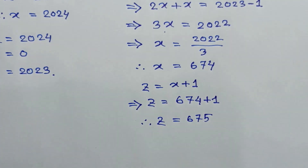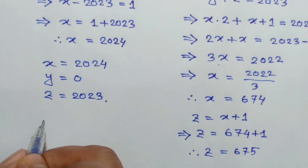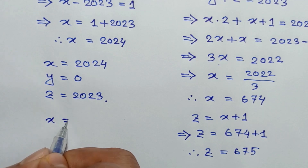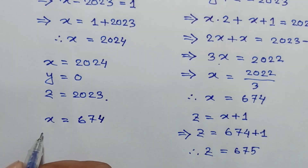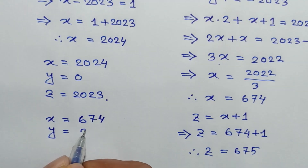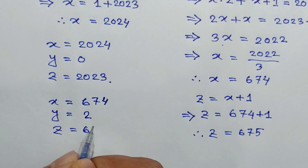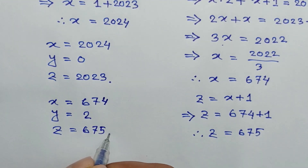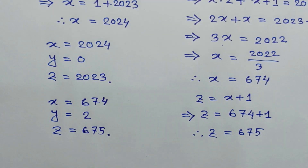From equation 7, z equals x plus 1. Substituting x equals 674, z equals 674 plus 1, so z equals 675. So from case two we have x equals 674, y equals 2, and z equals 675. These are the two sets of integer solutions. If you like this video, please subscribe to my channel. Thanks for watching.